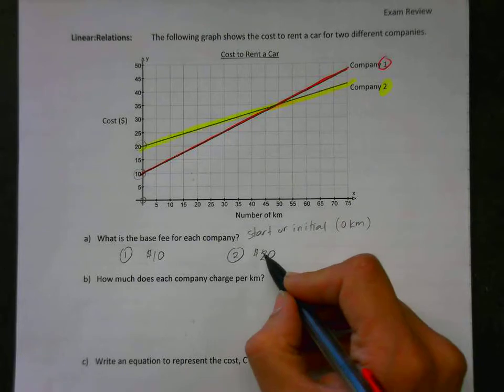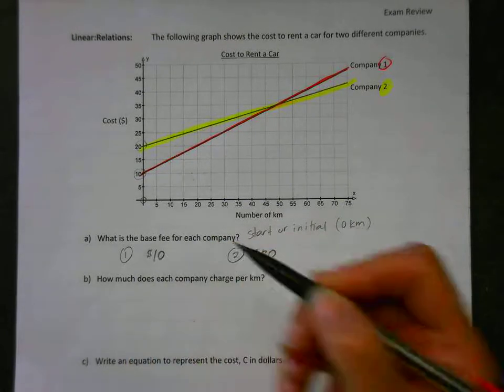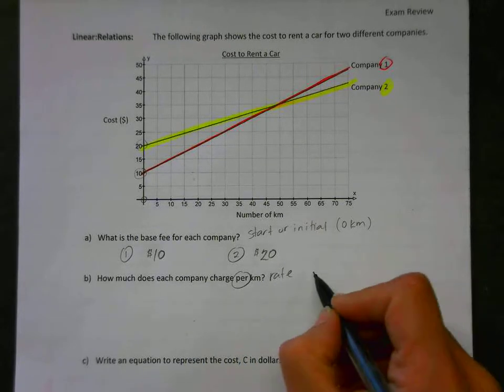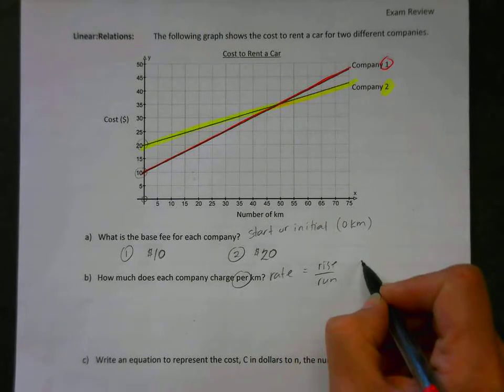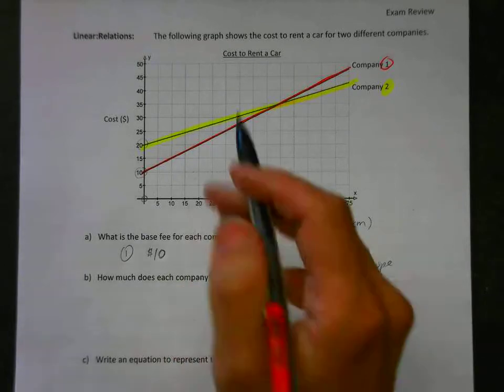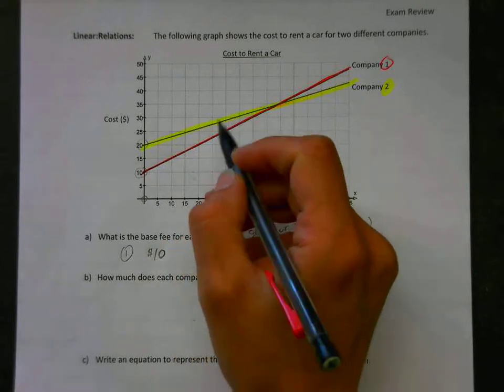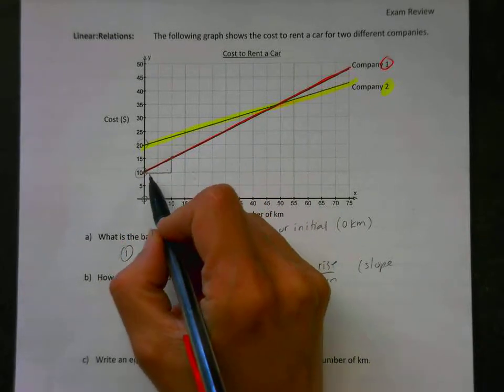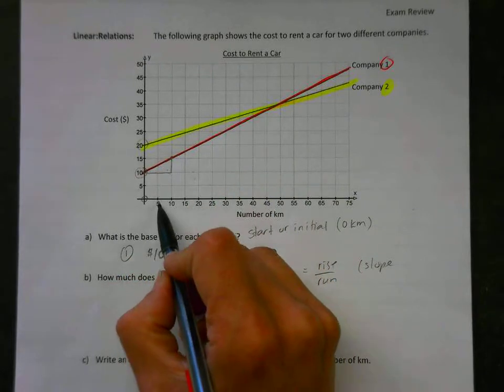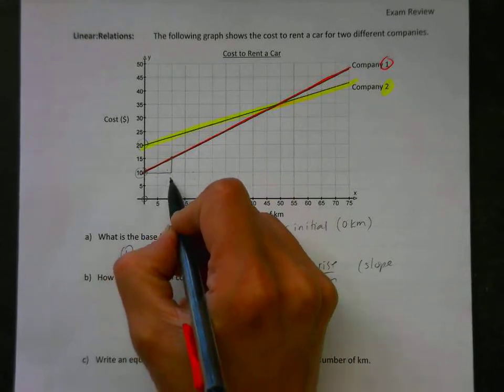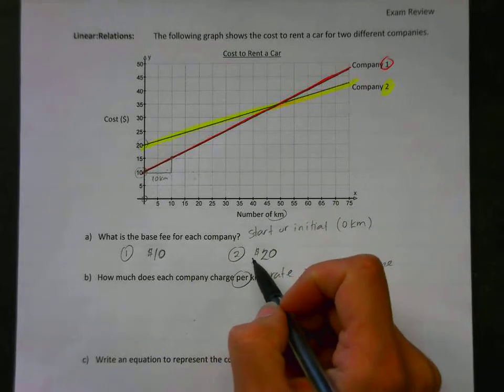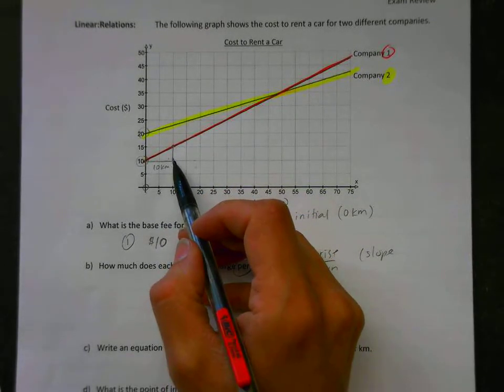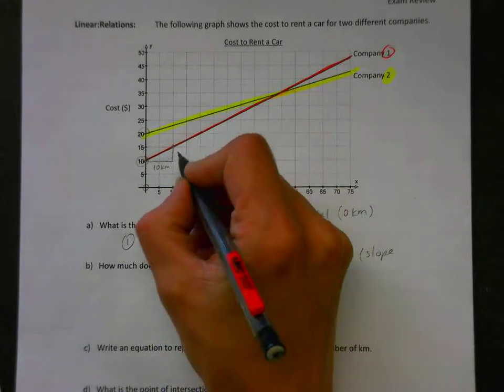How much does each company charge per kilometer? Per indicates a rate, and a rate we need rise over run, which some of you know as slope. So what I'm going to do is come up to the graph and I want to find a nice triangle. By nice triangle I mean a point with two dots, and here we go. So I can make a triangle and they're on two nice points. What I want to do is look and see what these sections are worth. They're worth five each, because I have five, ten, fifteen. So that means this is worth five, ten. This is ten kilometers because here the units for our horizontal axis is kilometers.